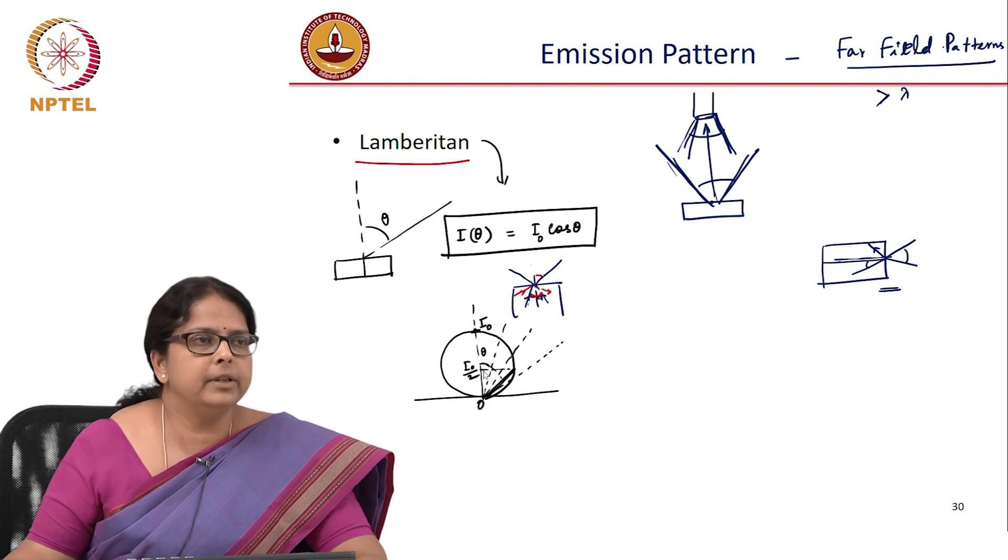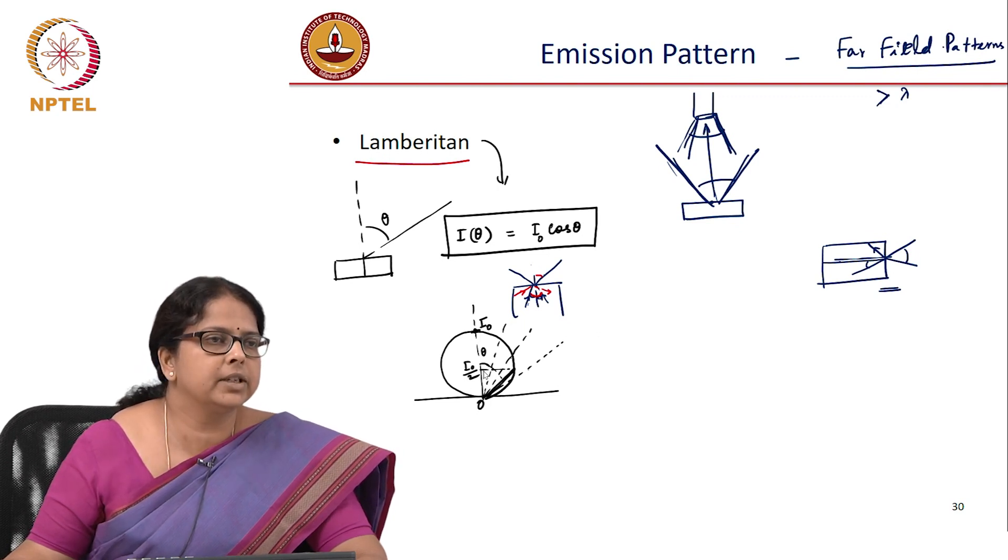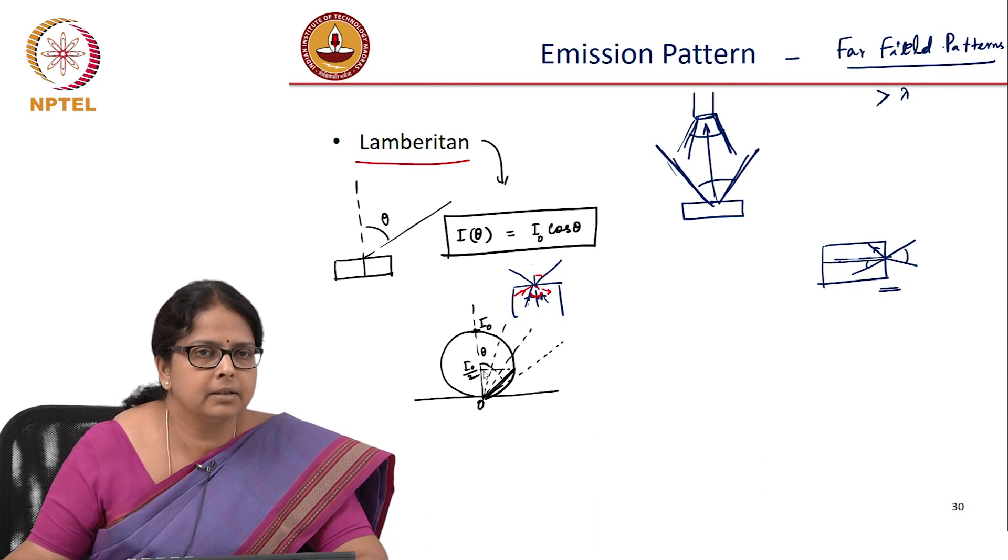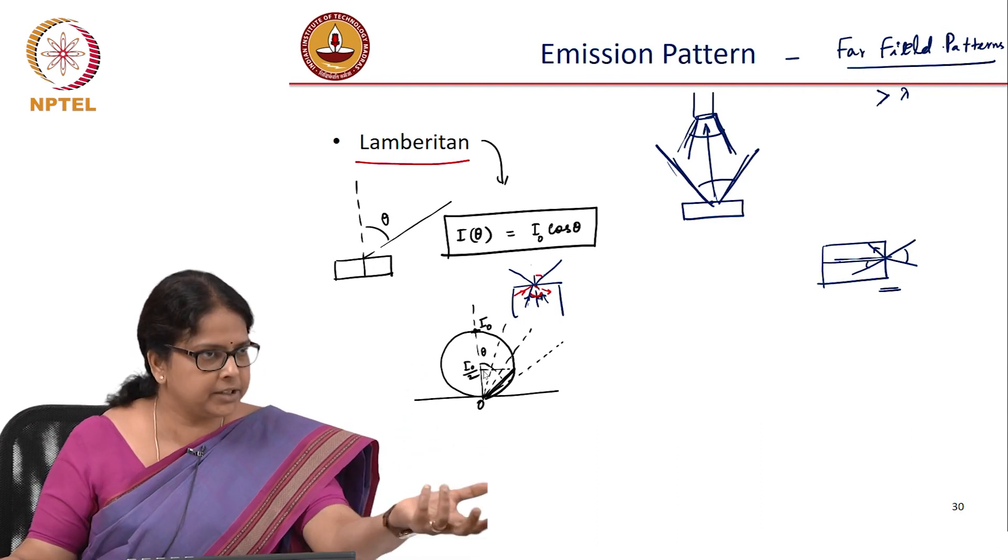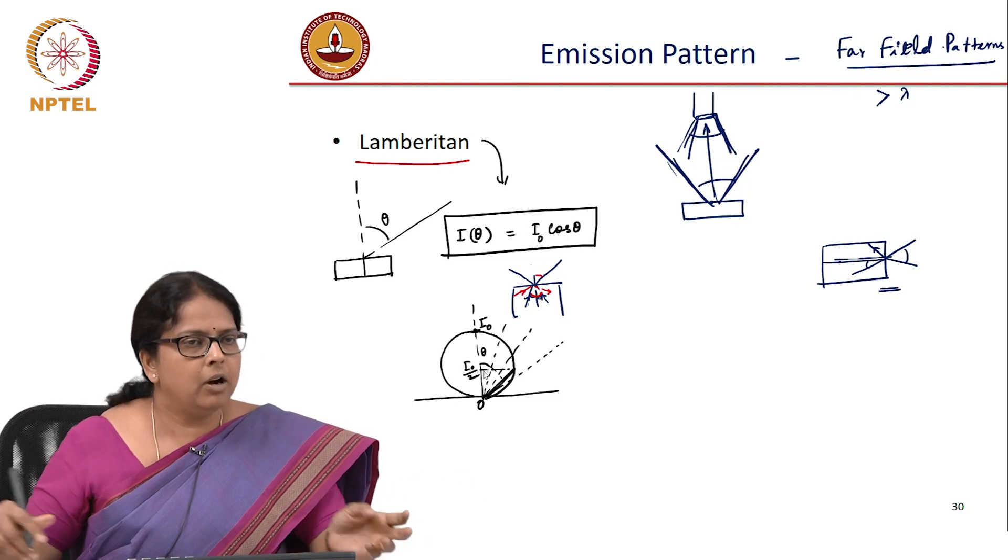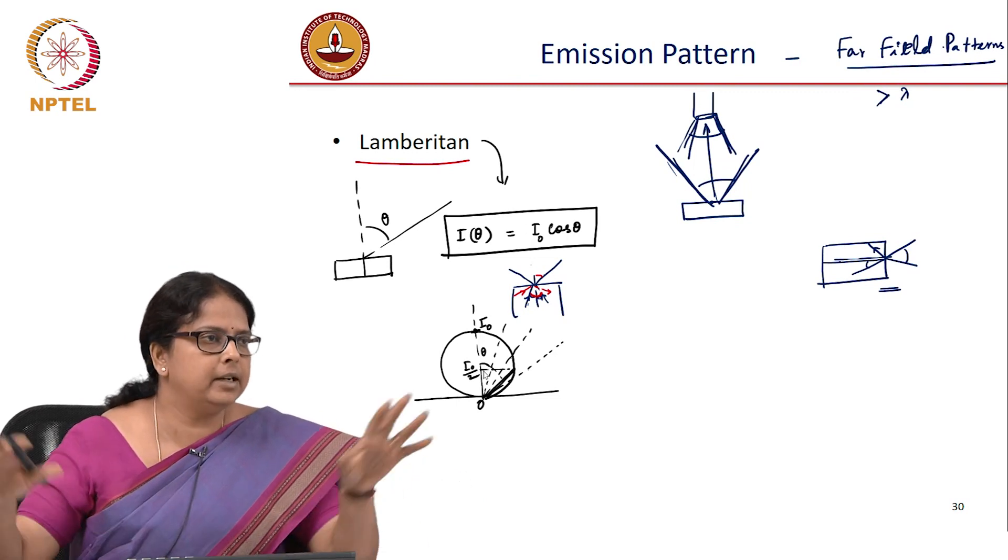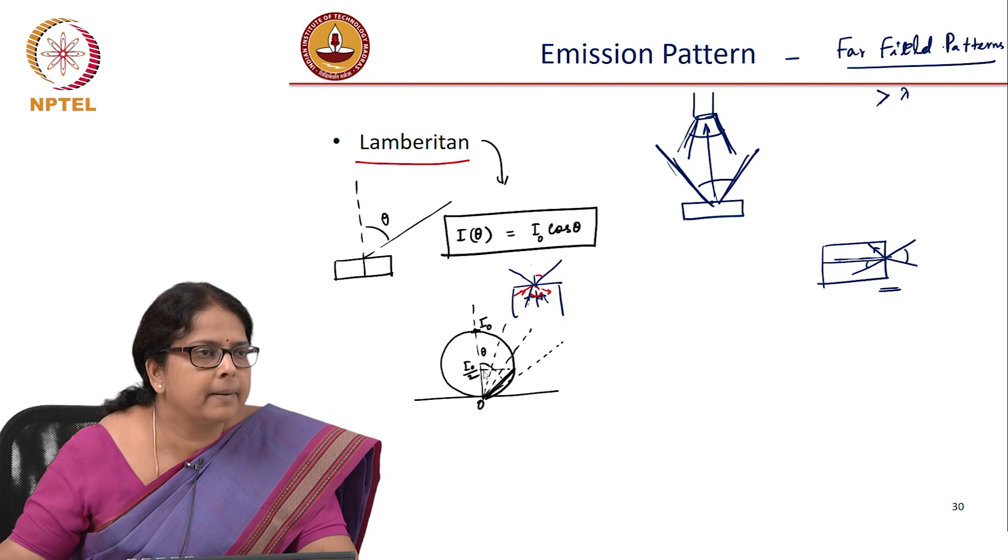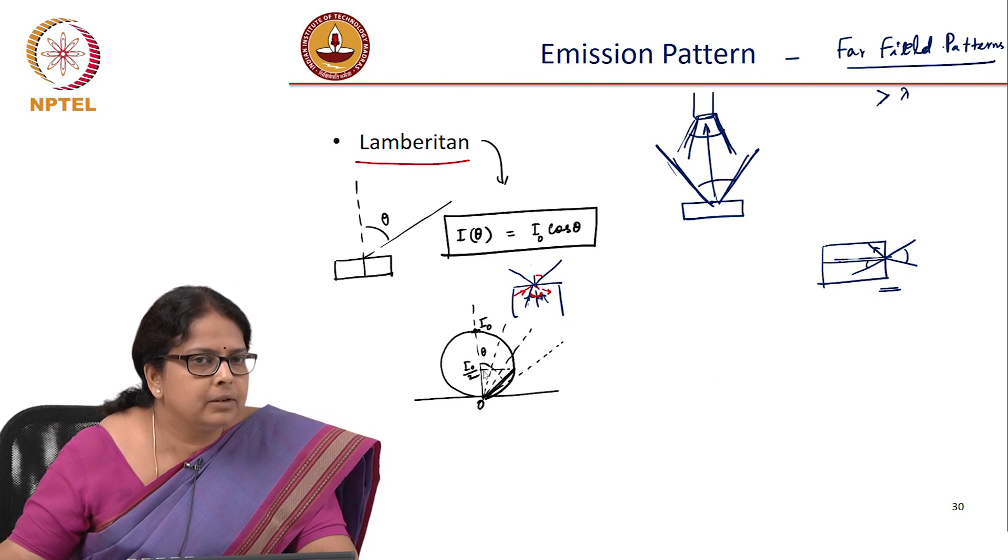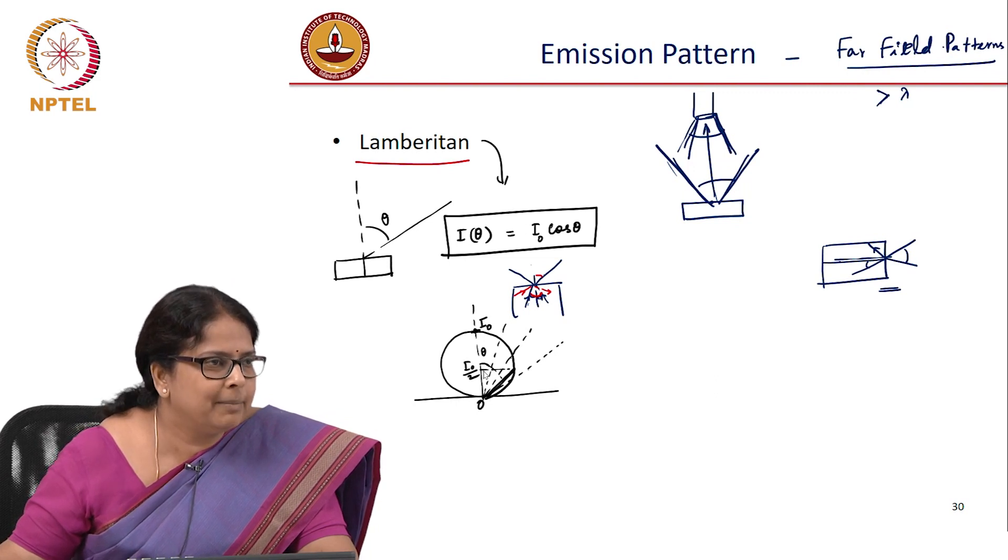Now, how does this tie up with the fact that the emission is restricted by total internal reflection? On one hand, we are saying it is restricted by total internal reflection. On the other hand, we say that surface emitting LEDs are all Lambertian. So, how are these two matching?